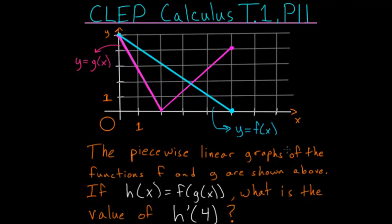The piecewise linear graphs of the functions f and g are shown above. If h(x) is equal to f(g(x)), then what is the value of the first derivative of h evaluated at 4?